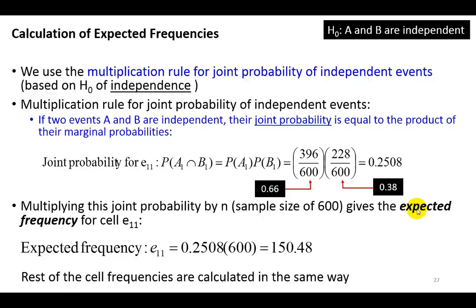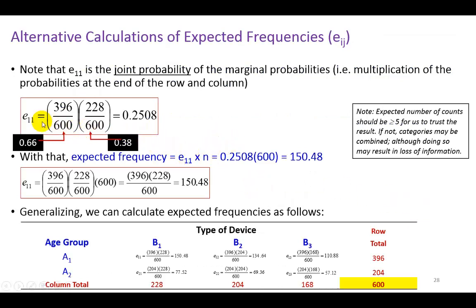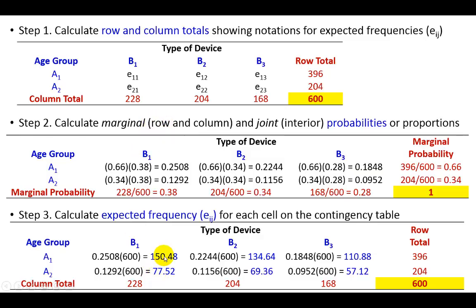And, in the same vein, we can expect about 9.5% of the respondents to be in the older age category and with preference for Chromebook. Alright. So, now, alternatively, by the way, as I show on this slide coming up. Now, notice that E11, again, is the joint probability, which we obtained by multiplying 0.66 by 0.38 to get 0.2508. So, and what we're going to do is to then use this proportion to determine the expected frequency. So, going back here, here's our grand finale, step number three, the expected frequency.